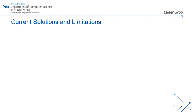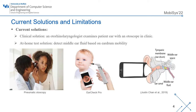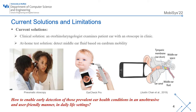Existing solutions for these ear conditions consist of clinical and at-home solutions. In the clinical solution, an otorhinolaryngologist may examine a patient's ear with an otoscope. For an at-home solution, there are two devices: EarCheck Pro and a smartphone-based detection device, which detects middle ear fluid based on eardrum mobility.